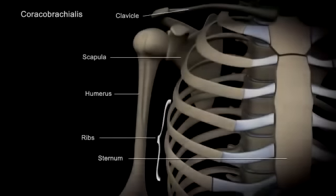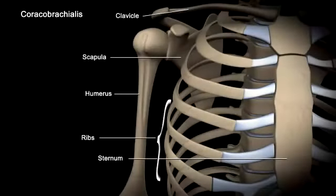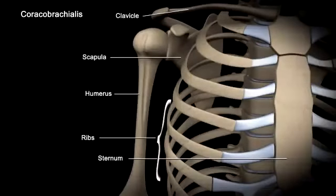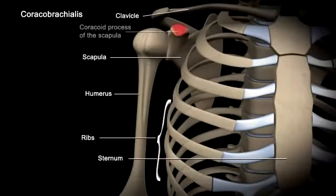The more superficial muscles are primarily responsible for the other movements of the shoulder. The coracobrachialis originates on the coracoid process of the scapula and inserts on the middle of the medial surface of the humerus.